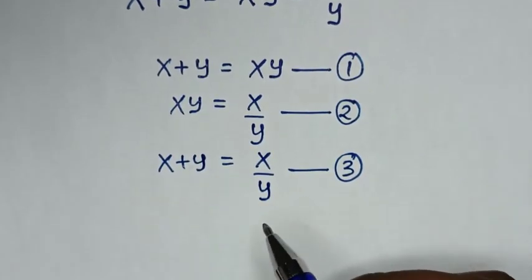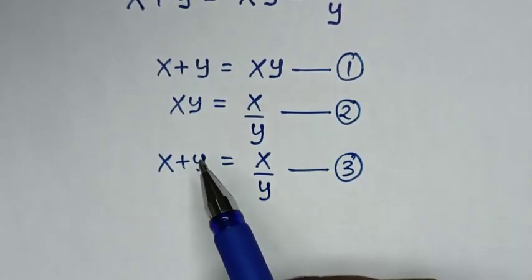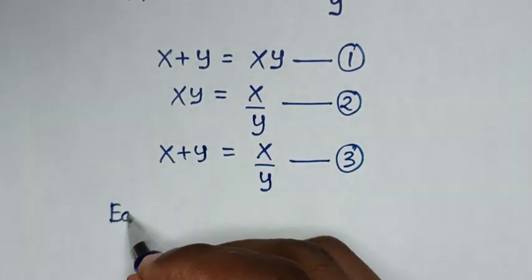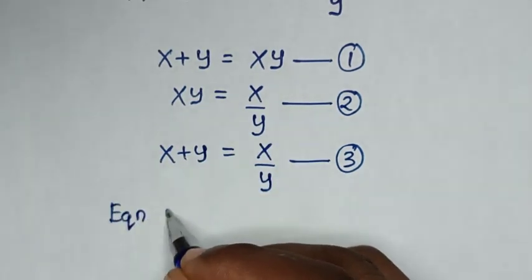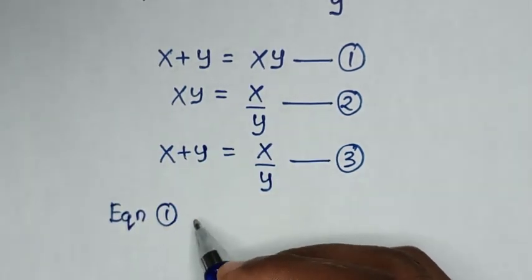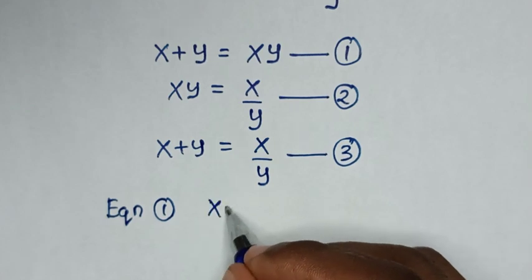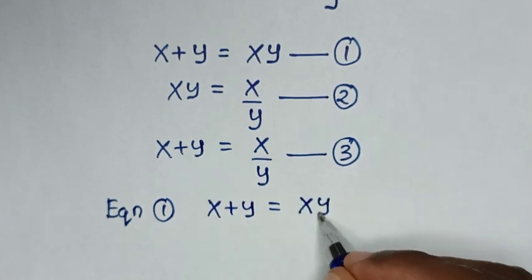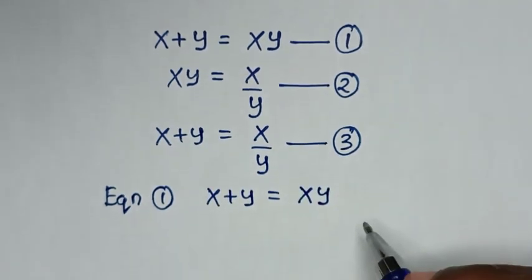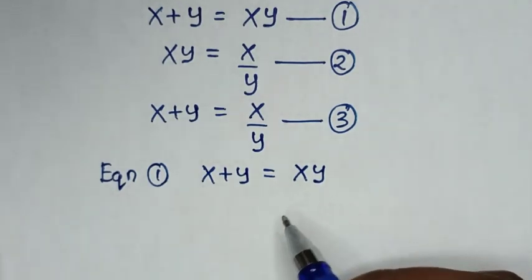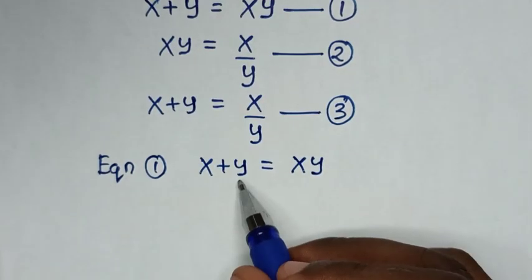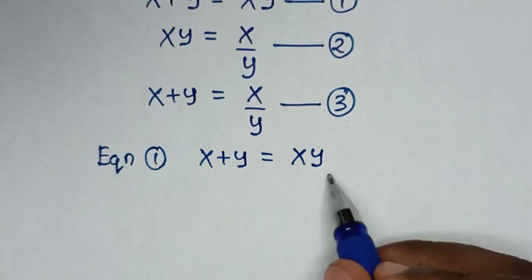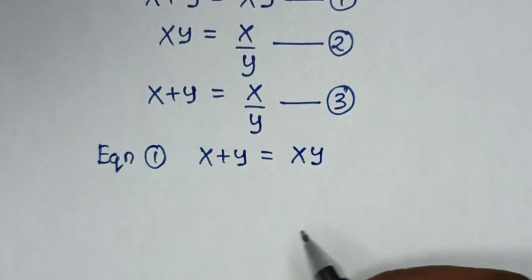Let's start solving from equation 1, which is x plus y is equal to xy. From this first equation, we make y the subject, so we take y to the right side.